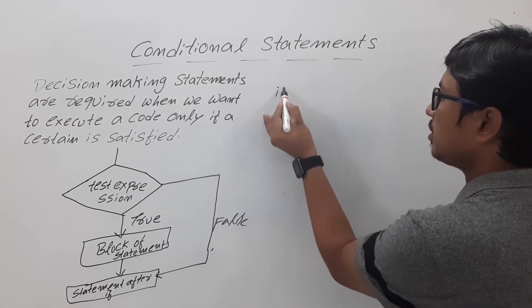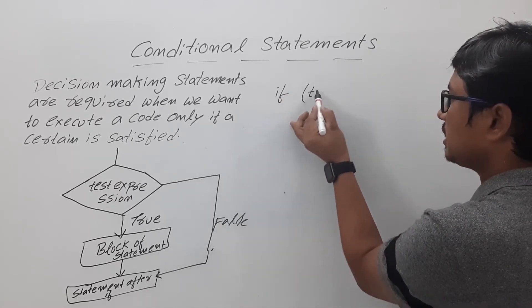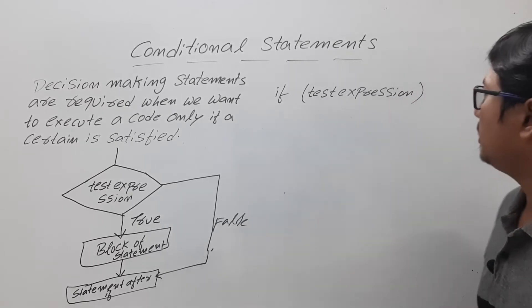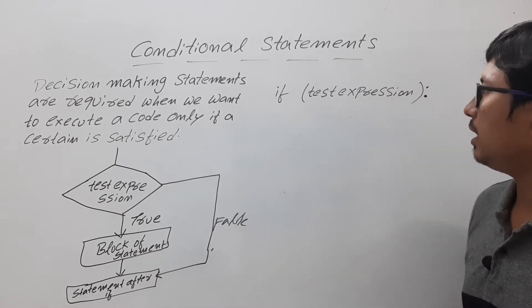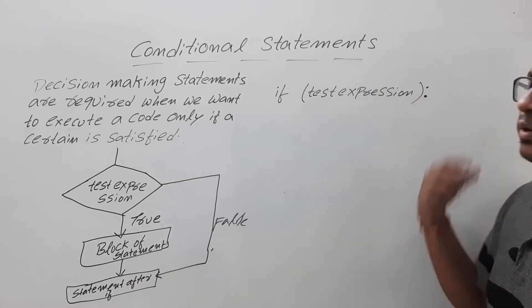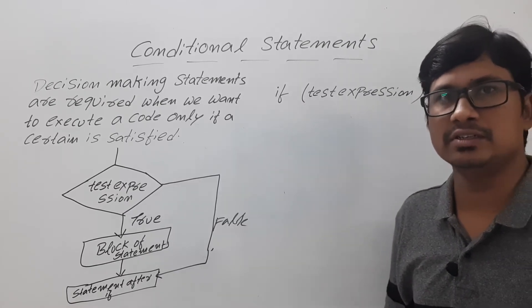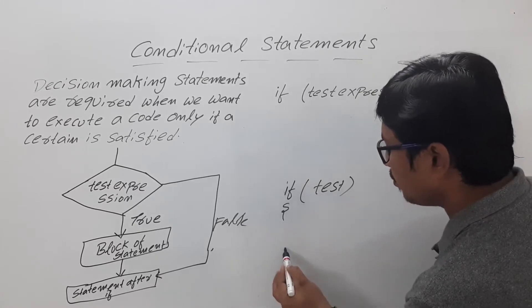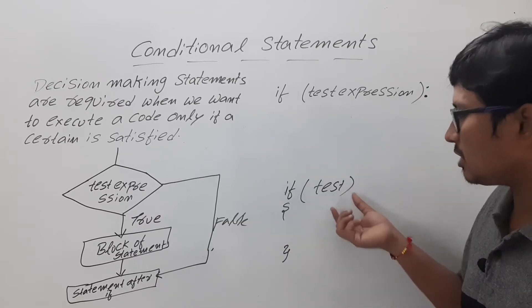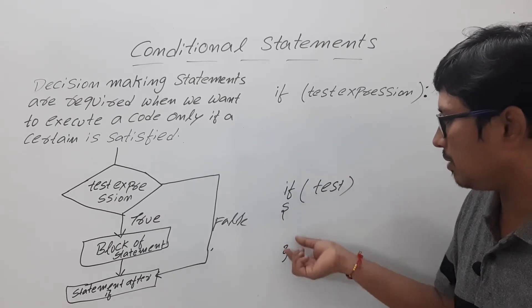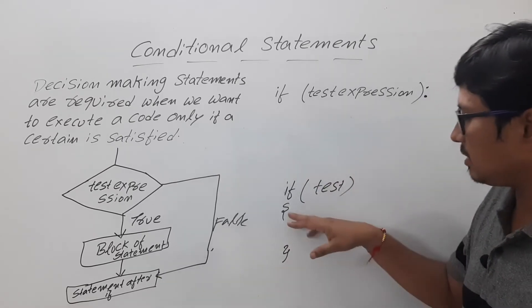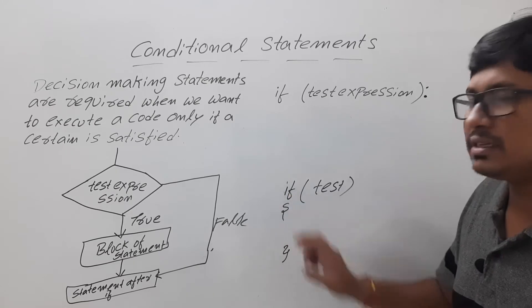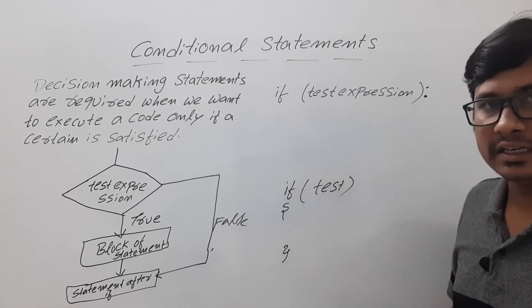For an if statement you need to use the keyword 'if', followed by the test expression or condition, then a colon — this is very important. In C programming we use curly braces to hold the block of statements to execute if the condition is true. If it is only a single statement, the curly braces are optional; for multiple statements you write them all within the curly braces.